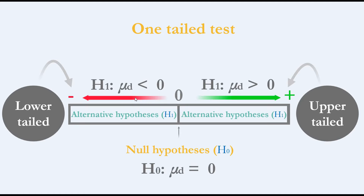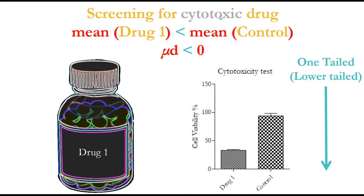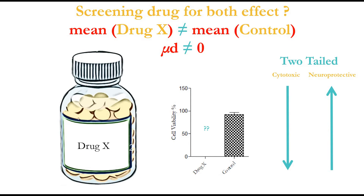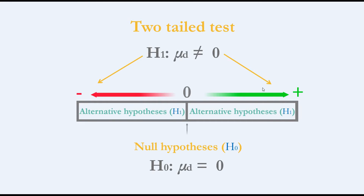In the lower-tailed test, it assumes the mean difference is less than zero, so it measures the effect only in that direction. For example, if we are screening for a cytotoxic drug, we are only interested if the mean of the drug is less than the mean of the control — we are measuring cell viability and interested if the drug is killing cells, so the mean difference should be less than zero. If we are screening for a neuroprotective drug, we are only interested if the mean drug is more than the mean of the control, so we use the upper-tailed test. But if we are interested in both effects — whether the drug increases or decreases cell viability — we use the two-tailed test, which assumes the mean difference is not equal to zero.